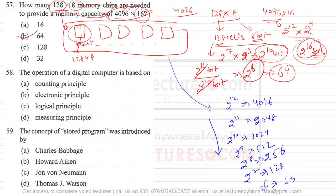Question number 58 asks what the operation of a digital computer is based on. Digital computers work on the principle of logic — you apply logic to perform operations. Counting principle is not correct, electronic principle is not correct since there are electronic devices but not 'electronic principles,' and 'missing principle' is obviously wrong. Computers are based on logical principles.